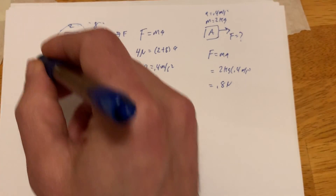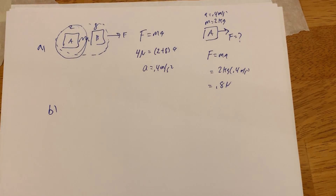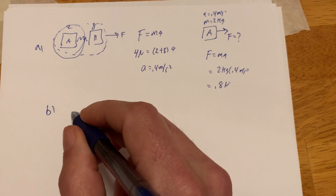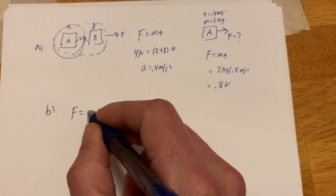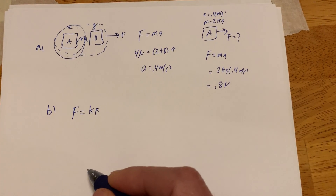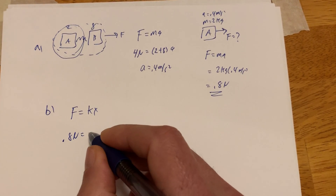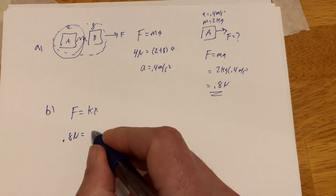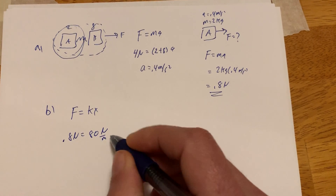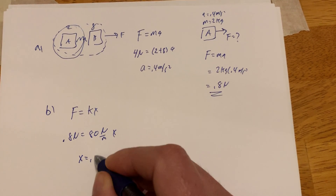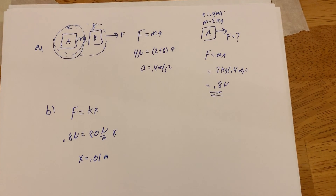Part B: calculate the extension of the spring. F equals kx. The force on the spring is 0.8 Newtons, and we're told it's an 80 Newton per meter spring constant. So 0.8 equals 80x. Doing a little division, I get x equals 0.01 meters. So that's Parts A and B.